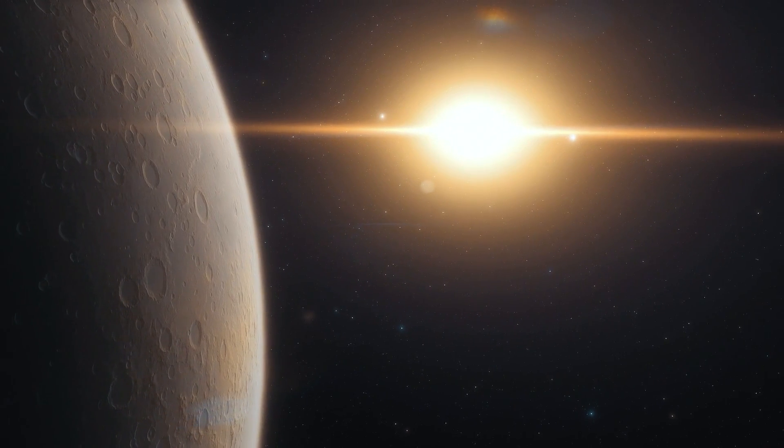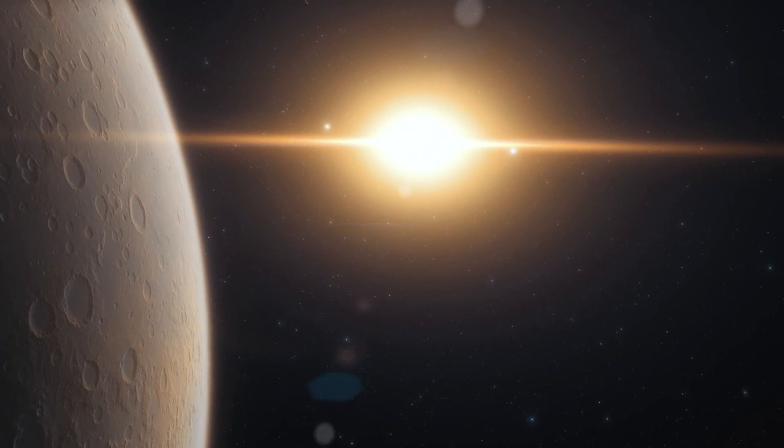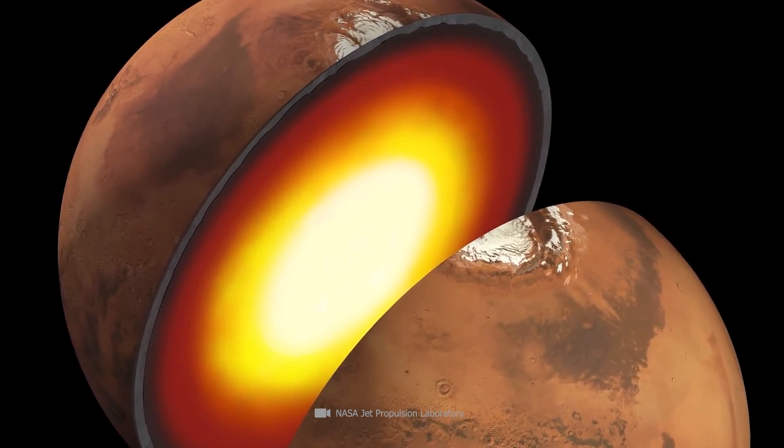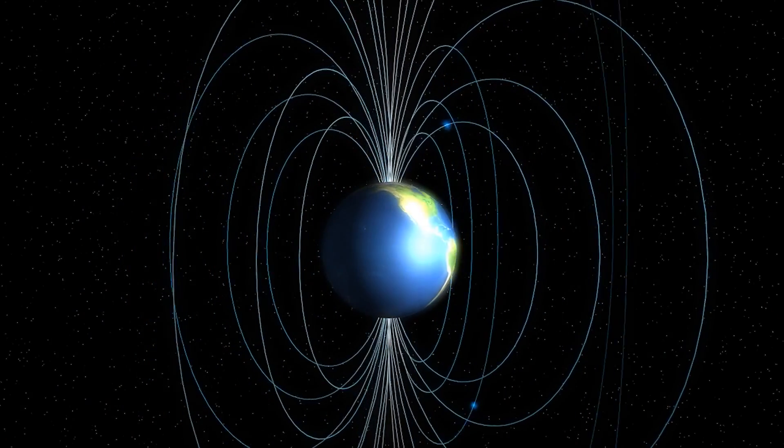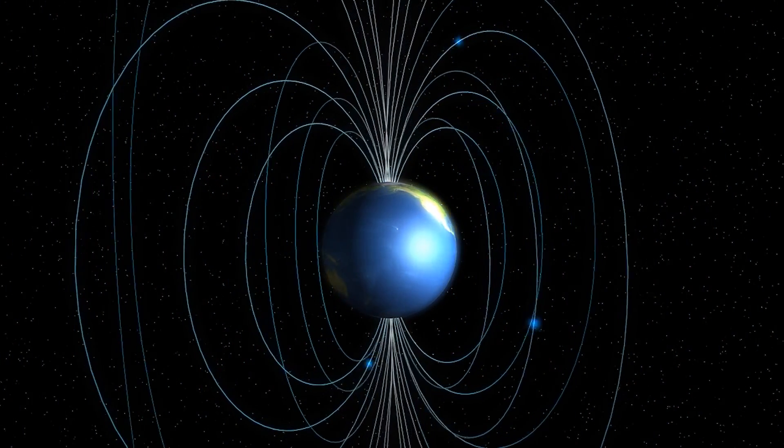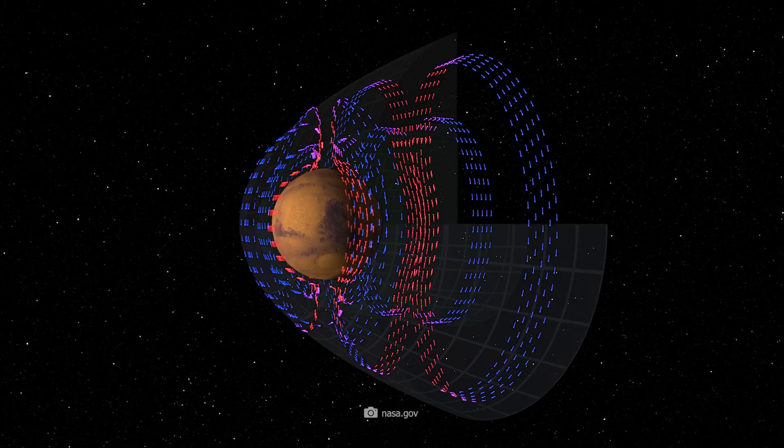The research suggests that the composition of the Martian core, particularly the presence of lighter elements, contributes to this phenomenon. While Earth has a strong magnetic field generated by geodynamo activity in the outer liquid core, Mars has a much weaker magnetic field.